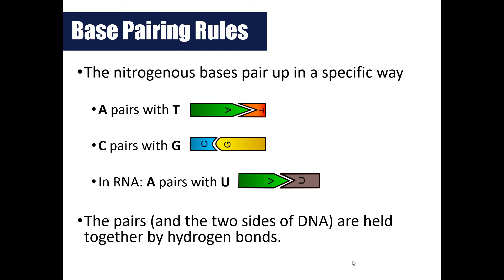Nitrogenous bases always pair in a specific way. In DNA, adenine always pairs with thymine, and cytosine always pairs with guanine. In RNA, adenine always pairs with uracil, and cytosine always pairs with guanine. These two nitrogenous bases pair together and bond via hydrogen bonds. Hydrogen bonds are weak, which is important for DNA replication.